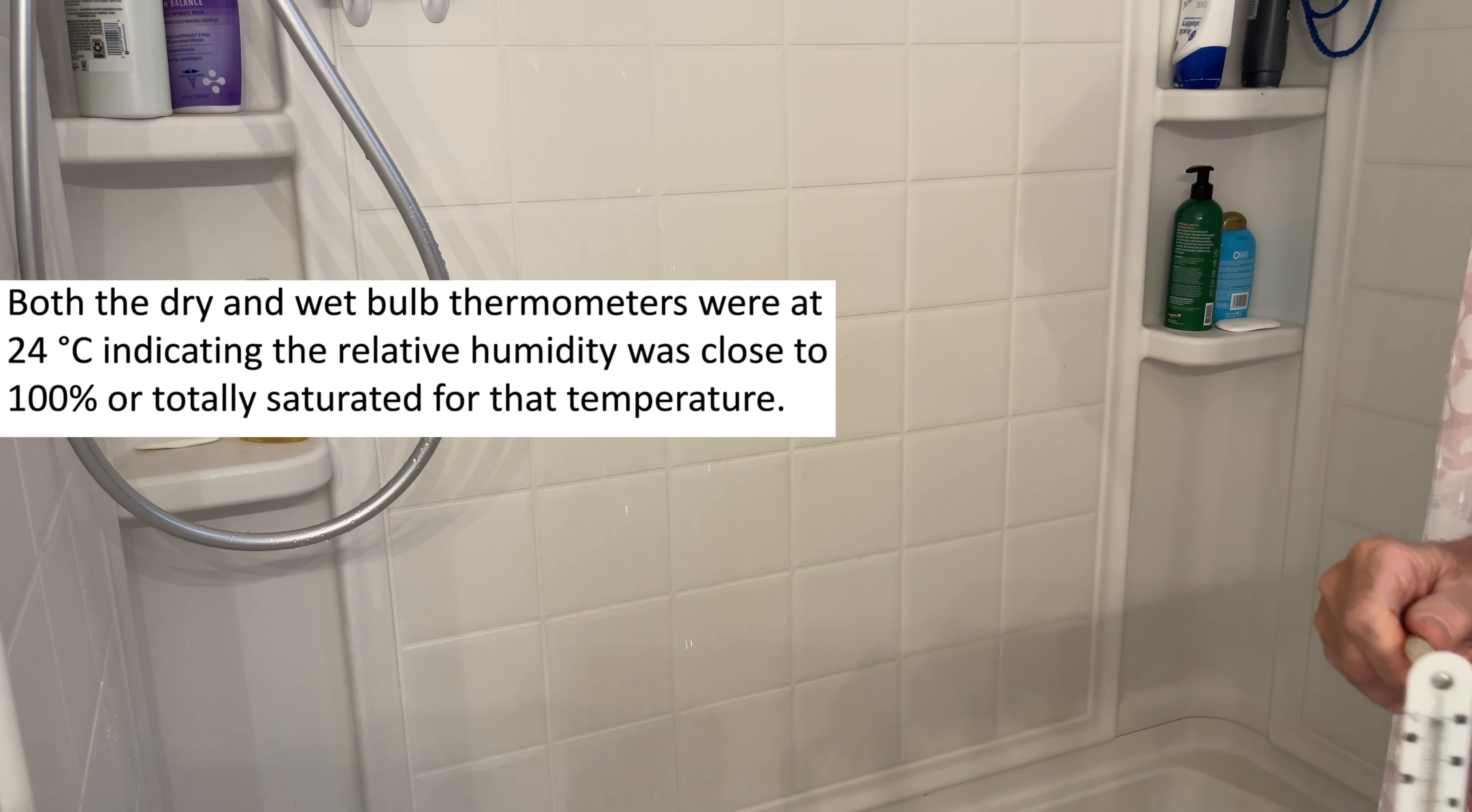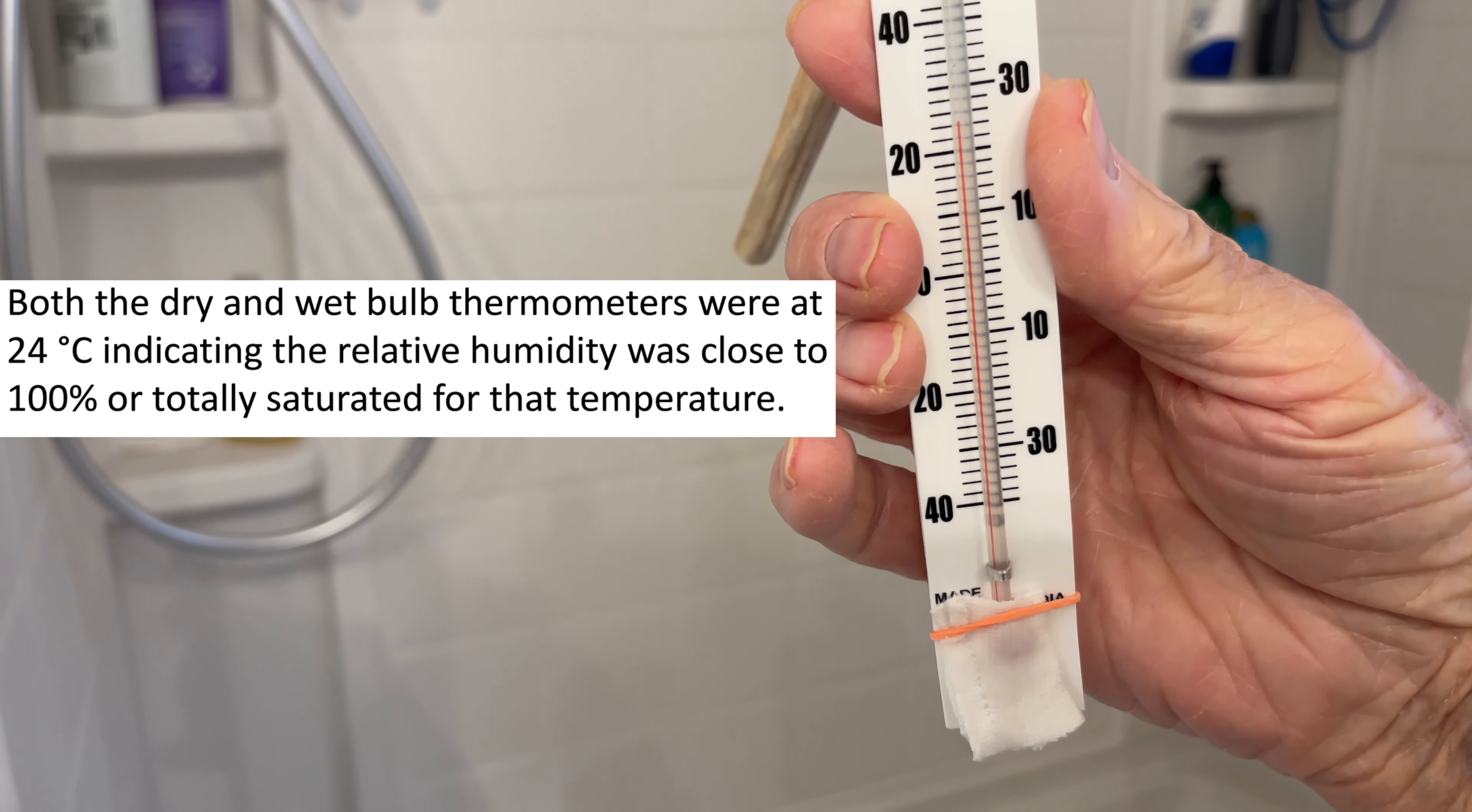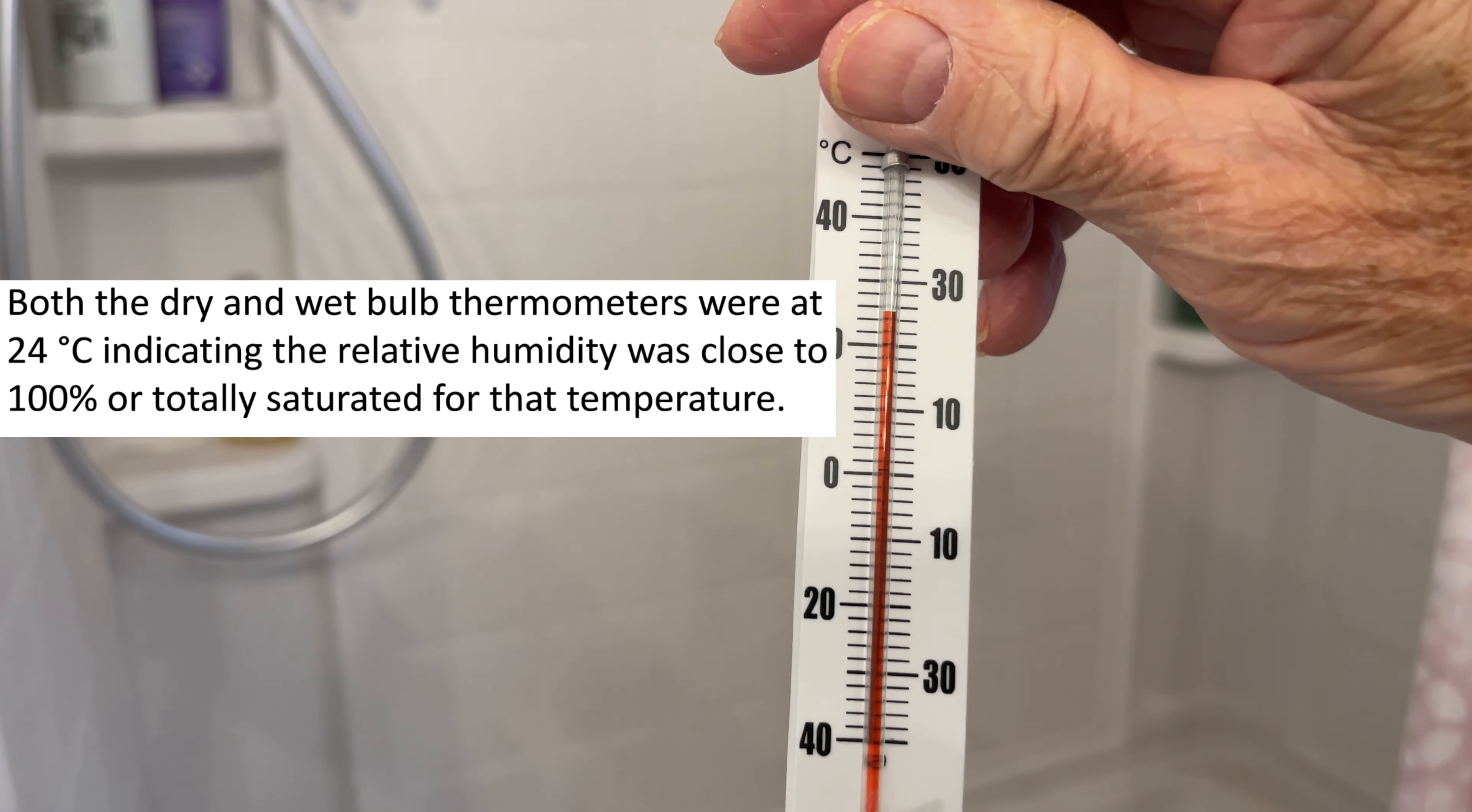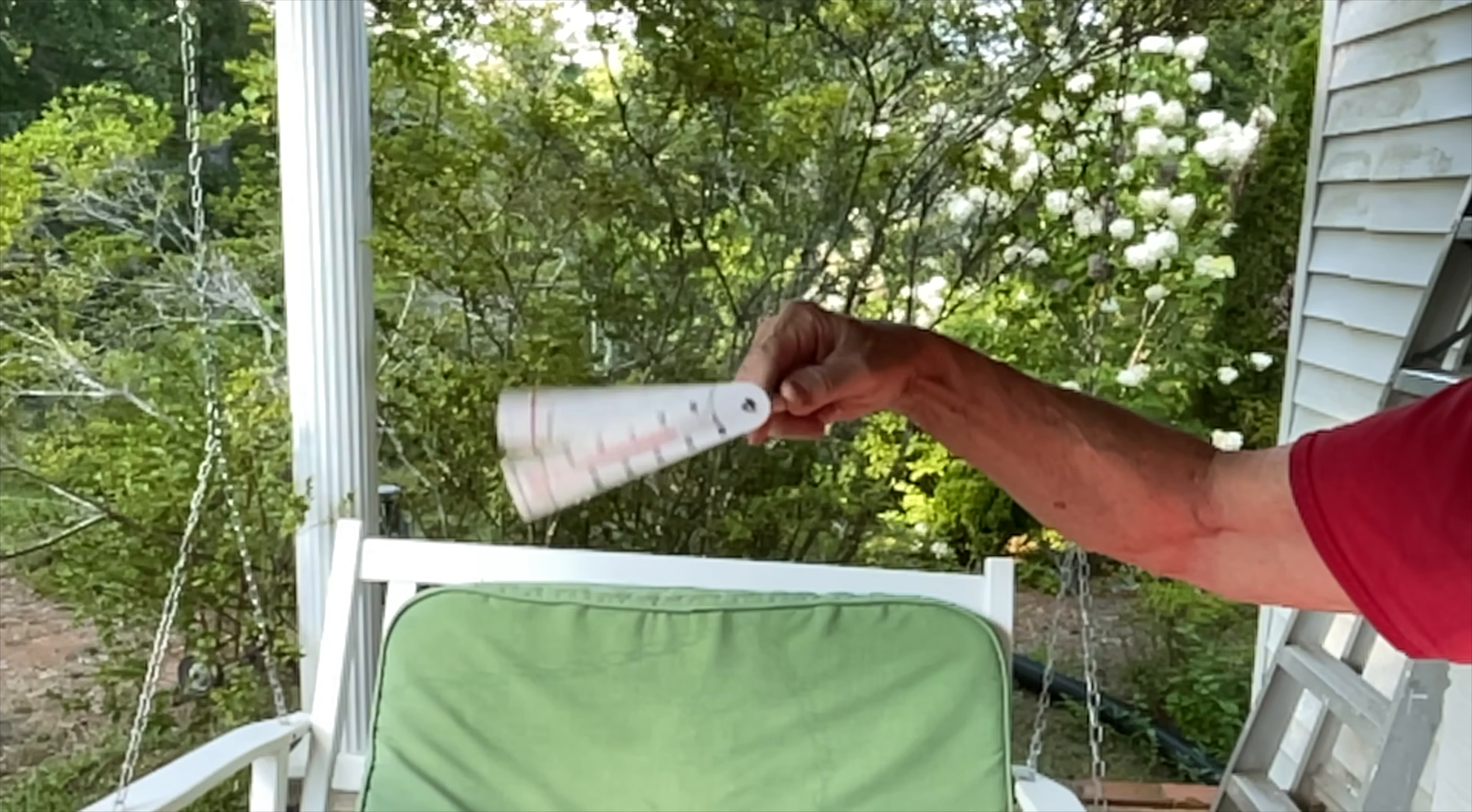Okay, two minutes. Let's look at our wet bulb temperature. Between about 20 and 24 it looks like. Slightly higher than 24 degrees Celsius. Close to 100% humidity. If you do this, you will have fun with it.